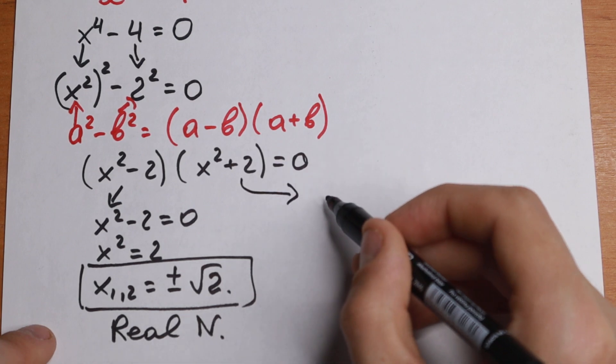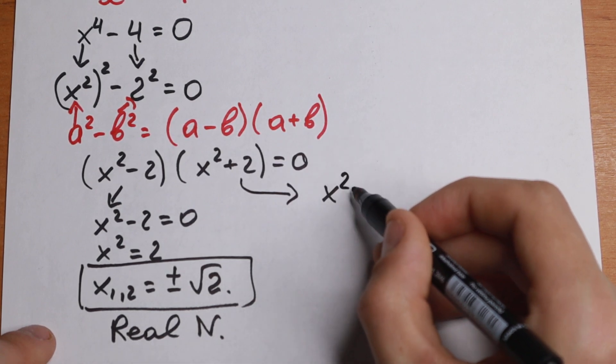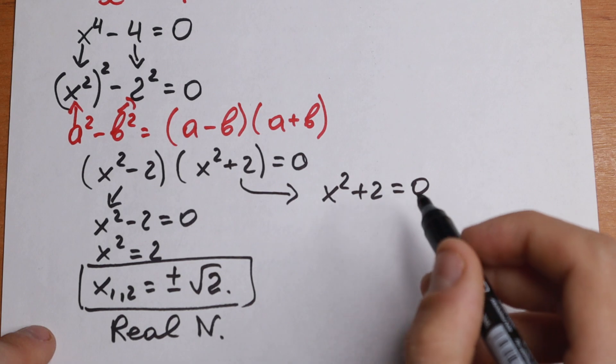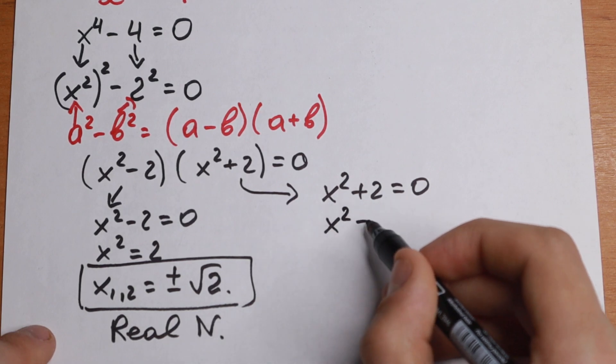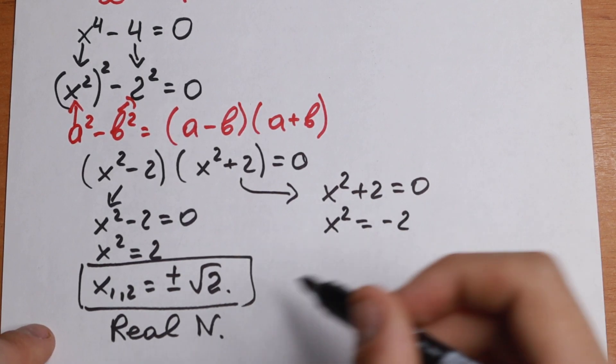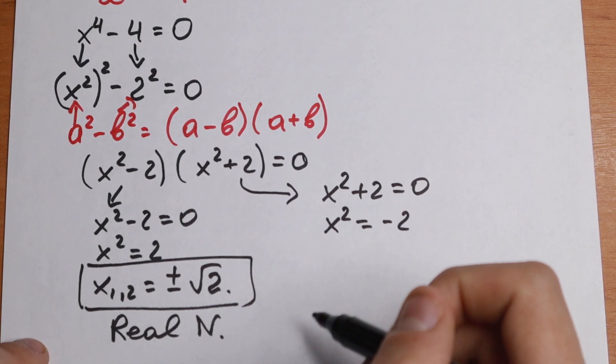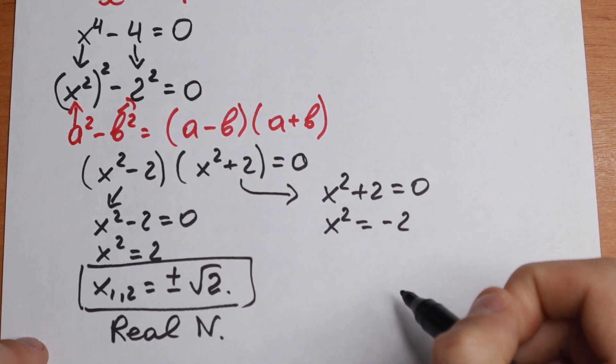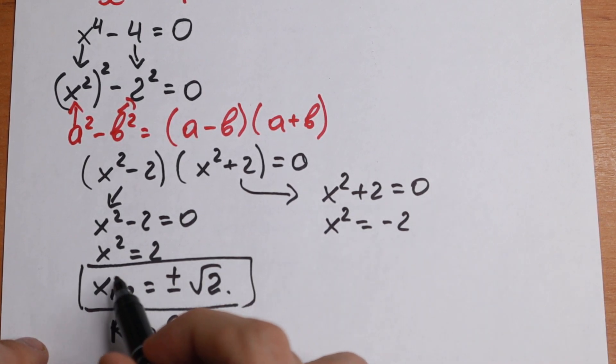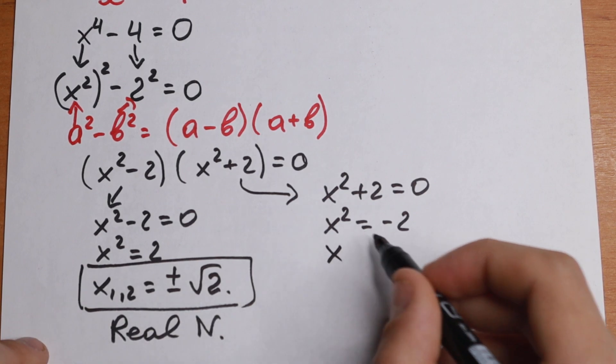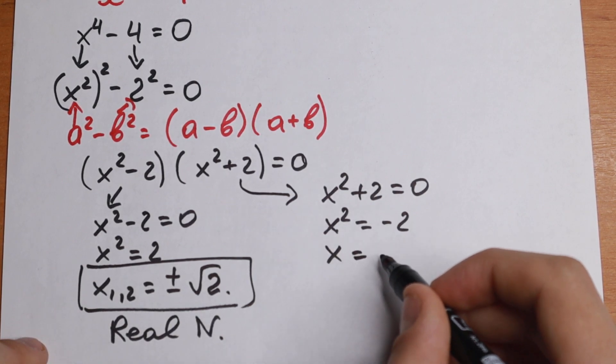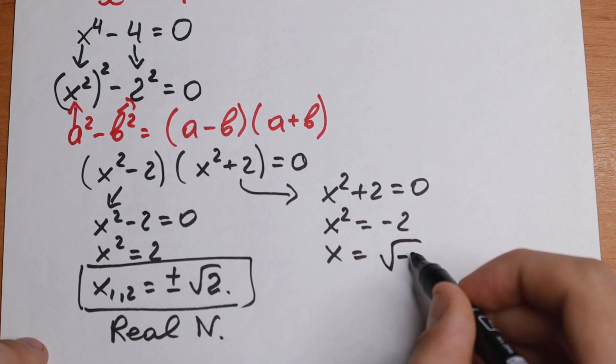And moreover if we solve this on the right we will have x squared plus 2 equal to 0. And as you can see x squared equals minus 2 has no roots in real numbers. So we need to find two roots in complex numbers. Let's use the same logic. Let's find the square root on both sides. We will have x equals square root of minus 2.